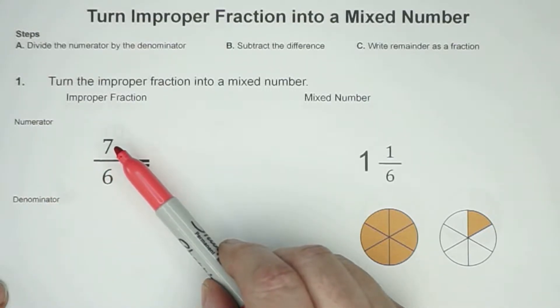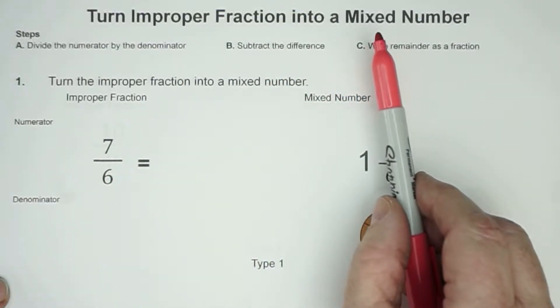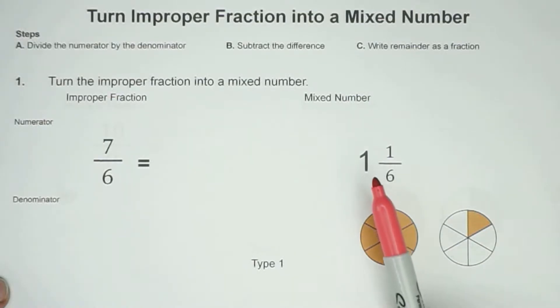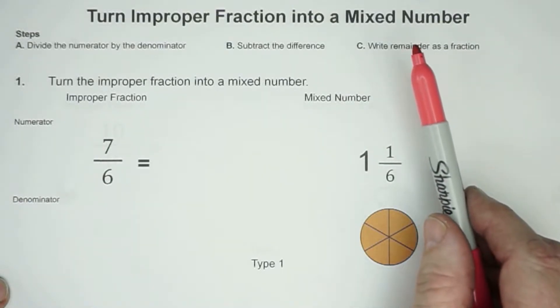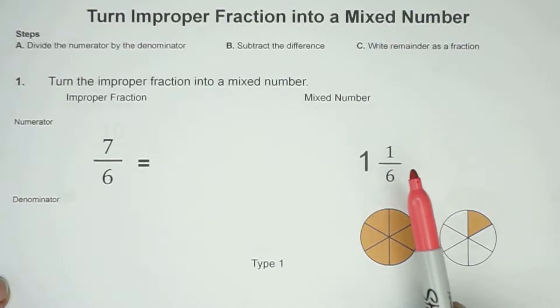So you can see that the 7 of our numerator is greater than our denominator of 6. A mixed number is when you have a number that has a whole number, like here we would have one whole, and a fraction of 1/6. And when you put them together, that's a mixed number. So our job today is to turn 7/6 into 1 and 1/6. We actually have the answer, but I'm just going to show you some ways how to do that.